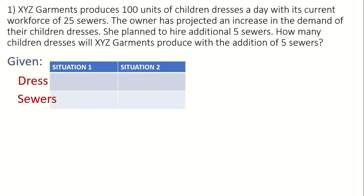For the first situation, if there are 100 dresses produced, then they are being made by 25 sewers. In the second situation, continuing the problem: the owner planned to hire an additional 5 sewers. Originally we have 25 sewers, and then it is added by 5, so our second situation will have 30 sewers.